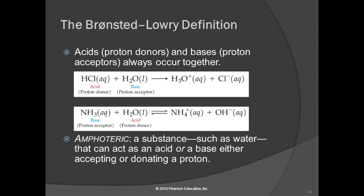We always have the acids and the bases donating and accepting in concert. Hydrochloric acid donates the proton to the water molecule, which accepts it — HCl is the acid, water is the base. In the ammonia case, NH3 accepts a hydrogen ion from water, making it the base, while the water molecule donates the proton, making it the acid. So water can act as an acid or as a base, and we have a special term for that: amphoteric. Just like amphibians can live in water or on land, amphoteric substances can act as acids or bases depending on the situation.